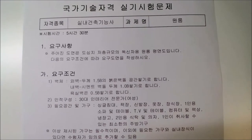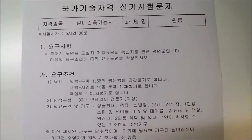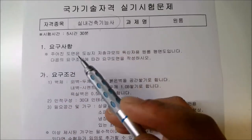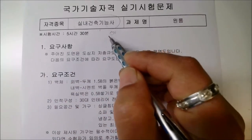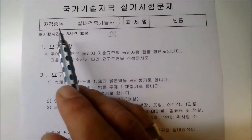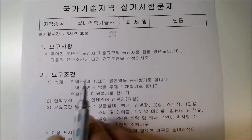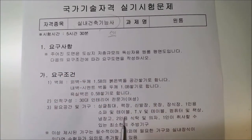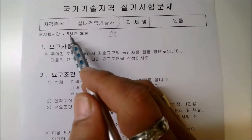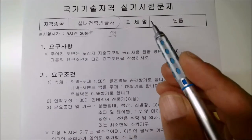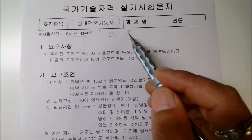반갑습니다. 이번 시간에는 커뮤니티에서 제일 많이 올라온 실내건축기능사 실기를 직접 선생님이 해보겠습니다. 이건 공개 예시 문제로 정답은 아니지만 전체적인 흐름만 아시면 문제 풀이에 전혀 지장이 없습니다. 시험 시간은 총 5시간 30분이며, 그 안에 총 4가지를 그려야 합니다.